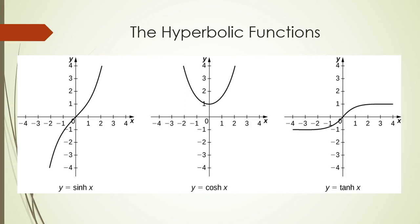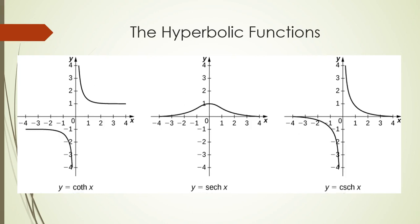This is the shape of hyperbolic sine, hyperbolic cosine, and hyperbolic tangent. These shapes probably look familiar or similar to other graphs that you've seen in algebra or pre-calculus courses. Then we have hyperbolic cotangent, hyperbolic secant, and hyperbolic cosecant.